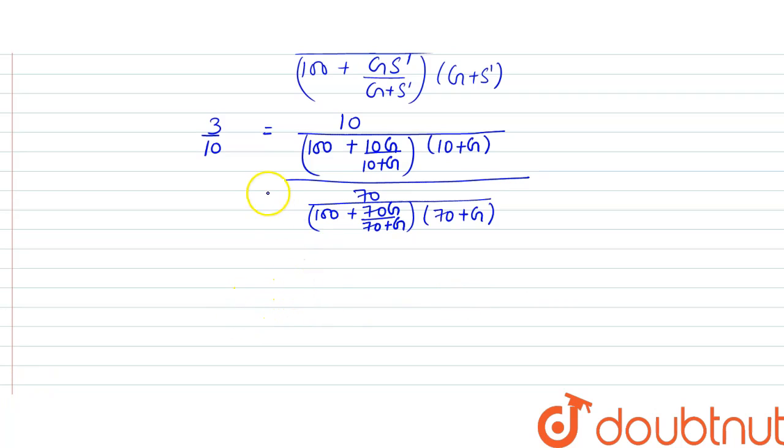Now from here what we can get is (7000 + 170G)/(7000 + 770G) is equal to 3 by 10. From here we get 7000 + 170G is equal to 2100 + 231G.